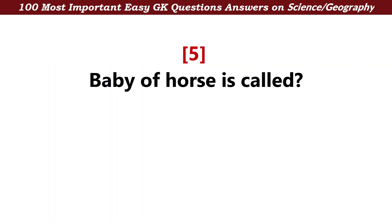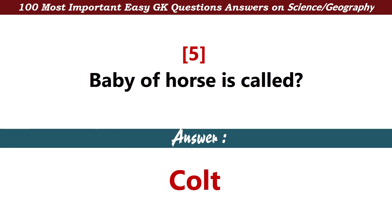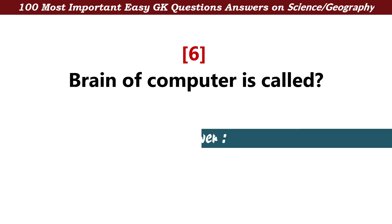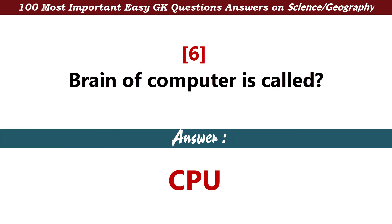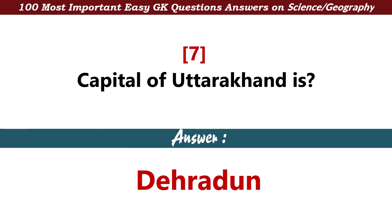Baby of a horse is called — Answer: Foal. Brain of computer is called — Answer: CPU. Capital of Uttarakhand is — Answer: Dehradun.